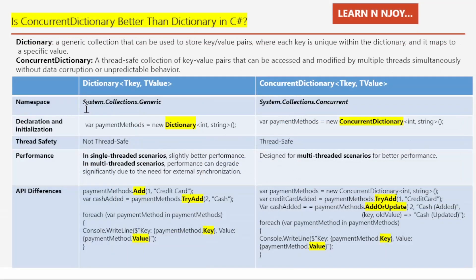When working with collections in C#, choosing the right one can significantly impact your application's performance, especially in multi-threaded scenarios. The two popular choices are Dictionary and ConcurrentDictionary — but is ConcurrentDictionary always the better choice? Let's find out.